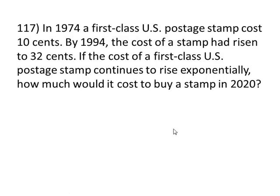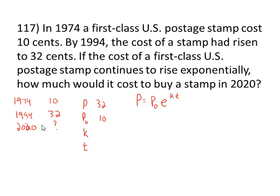Here's the first of two application problems. We're told in 1974, a stamp cost 10 cents. In 1994, that price had become 32 cents, and we want to figure out what the price will be in 2020. The equation we're going to use is p equals p₀e^(kt), where p is the amount at time t, p₀ is the initial amount or value, k is the growth constant, and t is the time in years. The price started off at 10 cents and had risen to 32 cents in a time period of 20 years, 1994 minus 1974, and we want to figure out what k is.